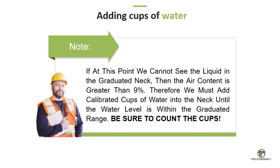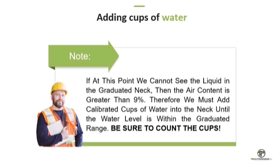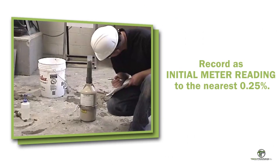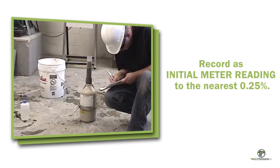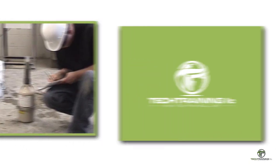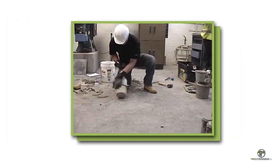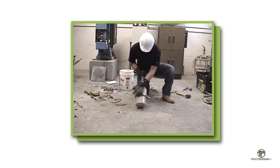If we cannot see the liquid in the graduated neck at this point, then the air content is greater than 9%. Therefore, we must add calibrated cups of water into the neck until the water level is within the graduated range. Be sure to count the amount of calibrated cups used, as we will need this information to determine the final air content. If the liquid level is stable without excessive foam, read the bottom of the meniscus to the nearest 0.25% and record this air content as the initial meter reading. Once the initial meter reading is obtained, re-tighten the cap and repeat the one-minute rolling procedure.